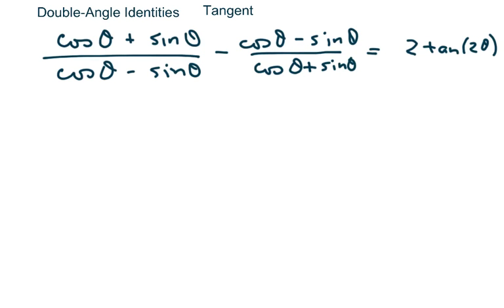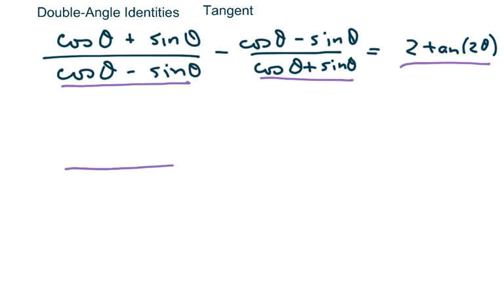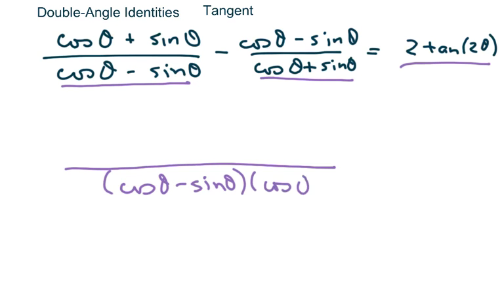Hi everyone, we're going to continue on with our different identities and we're going to establish that the left side looks like this double angle of tangent. So the first thing I'm going to do is use my common denominator here, which is cosine of theta minus sine of theta, times cosine of theta plus sine of theta.